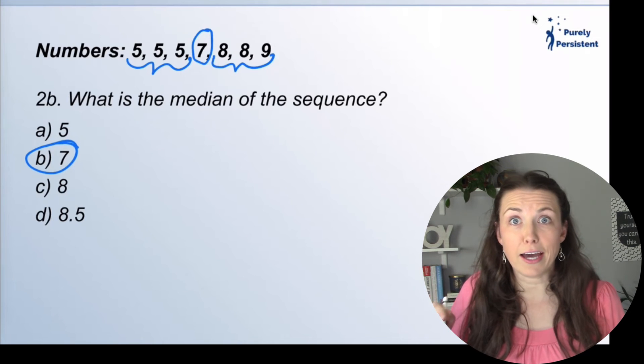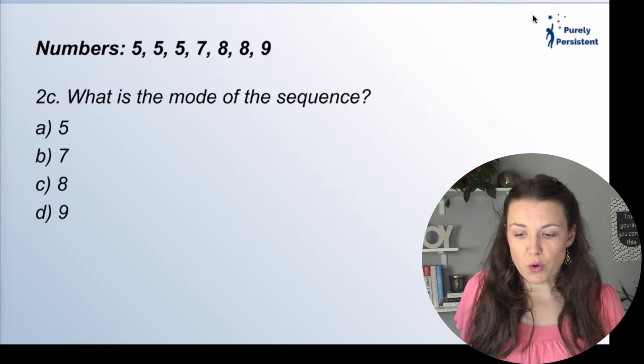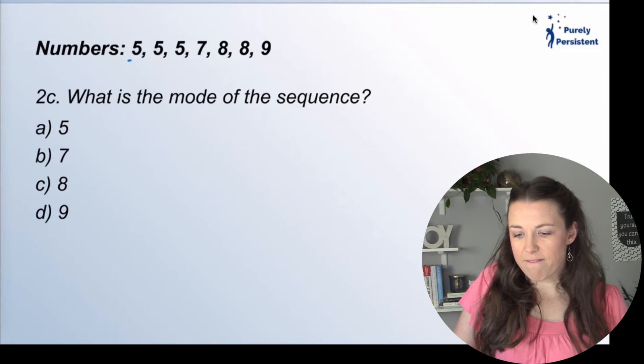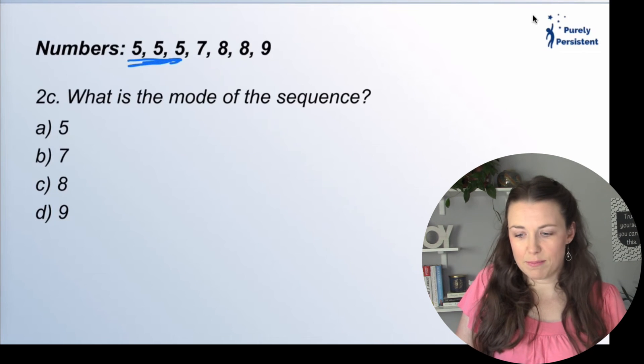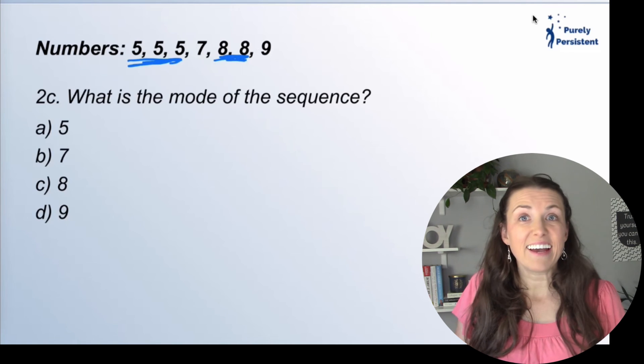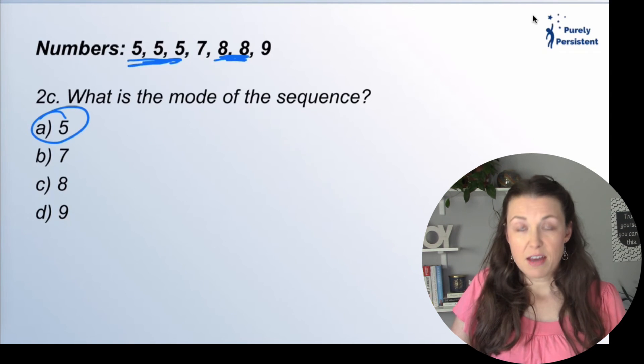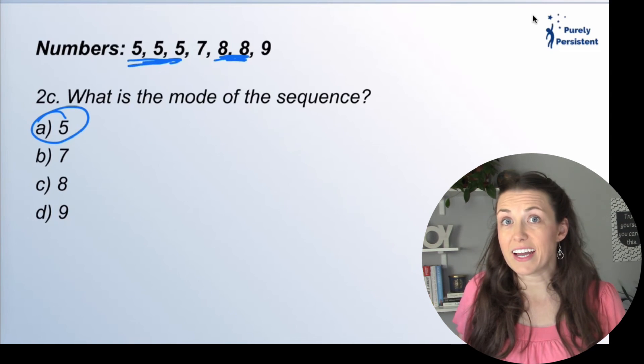Again, make sure you know how to do it if there are even numbers, because it's a little bit different. What is the mode? All right. So notice here how five happens three times, seven happens once, eight happens twice, and nine happens once. So I know that the mode here is going to be five, because five happens three times.